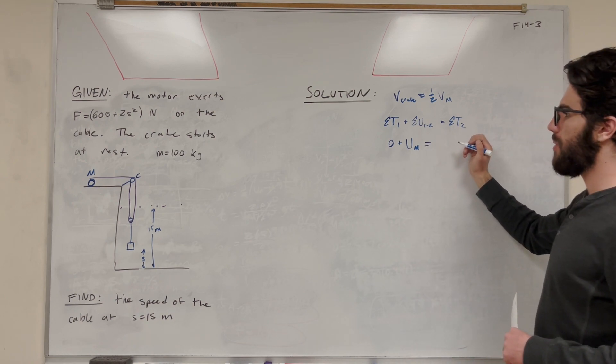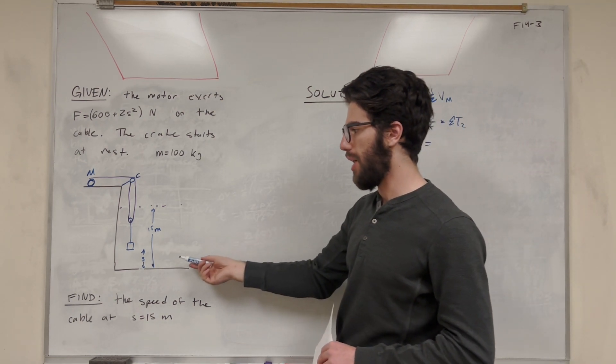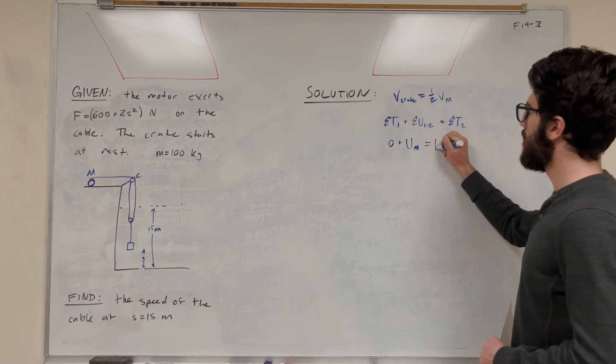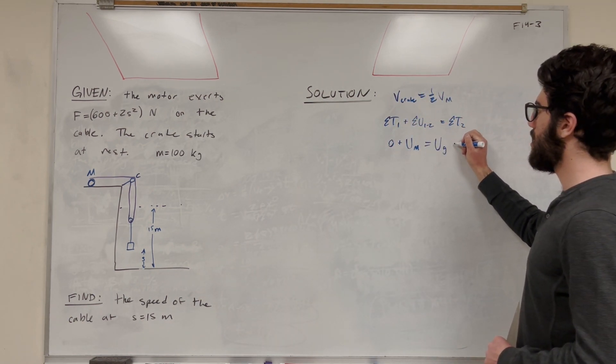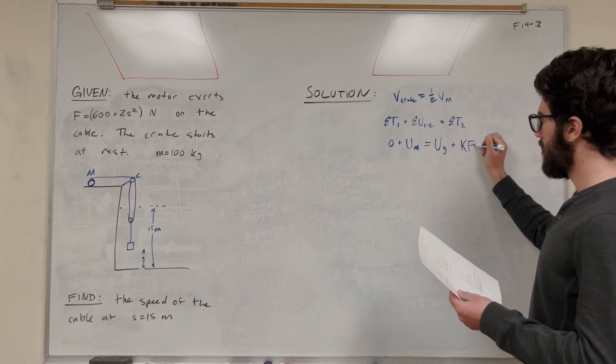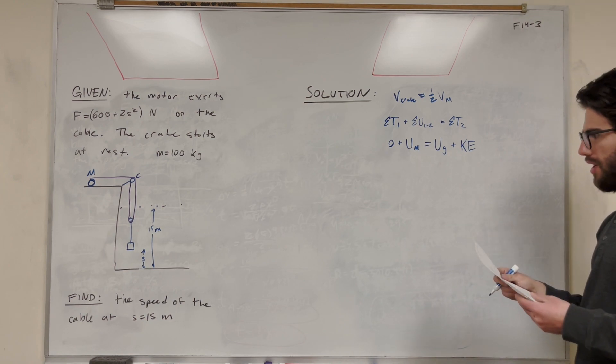So then what's our final energy? Well, we're going to have gravitational potential energy, right? We're raising 15 meters, so that crate's going to have potential energy. That's our gravitational. And then, of course, it's going to be moving at some velocity, so it's also going to have kinetic energy.